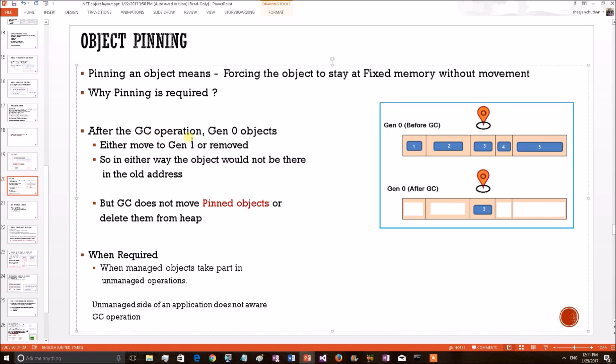After a GC operation, Gen0 objects, i.e. referred objects will be moved to Gen1 region and the unreferred Gen0 object will be picked by garbage collector.